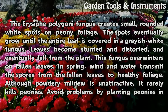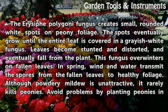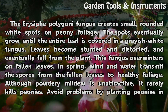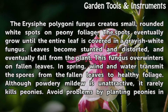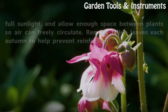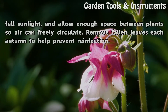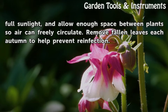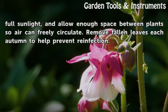This fungus overwinters on fallen leaves. In spring, wind and water transmit the spores from the fallen leaves to healthy foliage. Although powdery mildew is unattractive, it rarely kills peonies. Avoid problems by planting peonies in full sunlight and allowing enough space between plants so air can freely circulate. Remove fallen leaves each autumn to help prevent reinfection.